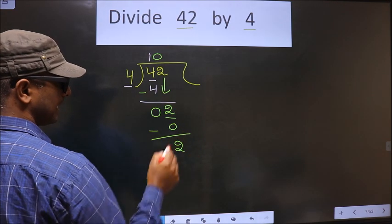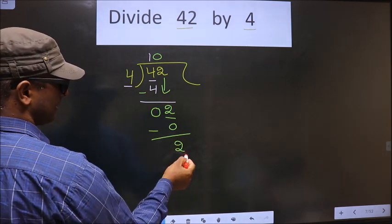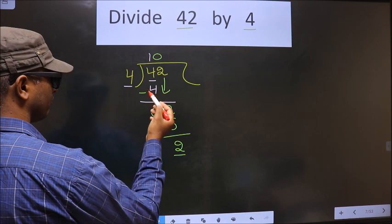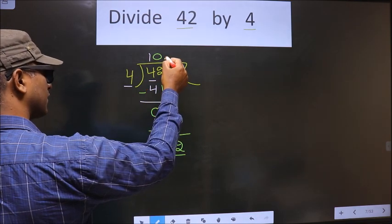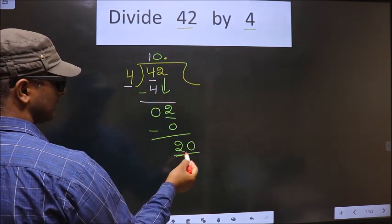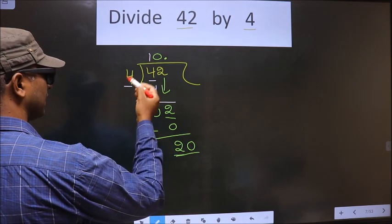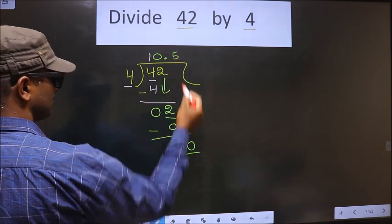Now we did not bring any number down. Now this is smaller than 4. So now you can put the decimal and 0 here. So now here we have 20. When do we get 20 in the 4 table? 4 times 5 is 20.